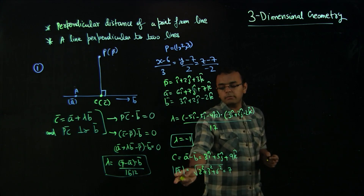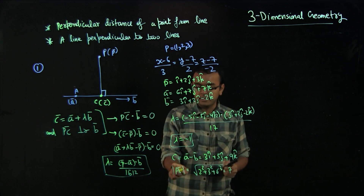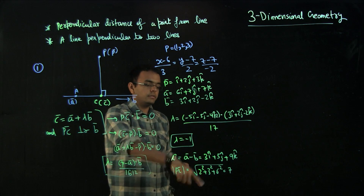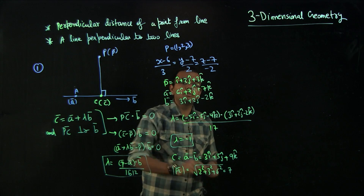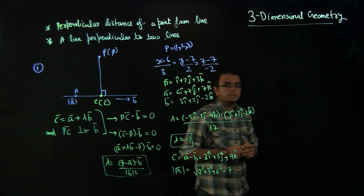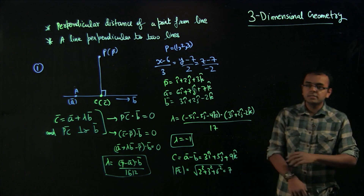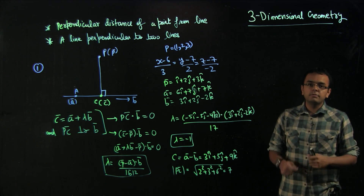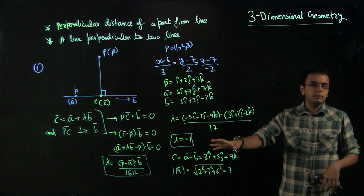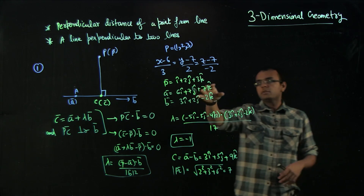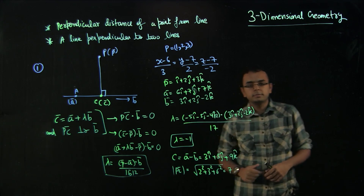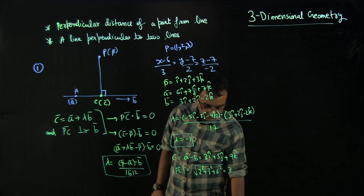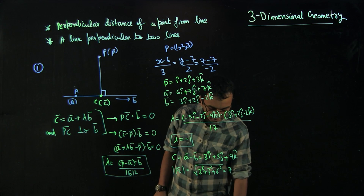The distance |PC| is found by taking the difference of coordinates: √(2² + 3²...) which comes out to be 7. You know point C, so you find the distance by taking the square root of the sum of squared differences of x, y, and z components. I hope this is clear how to solve this type of problem. If you are not comfortable, please practice — make some problems yourself, choose an equation of a line, pick a point, and do the problems.